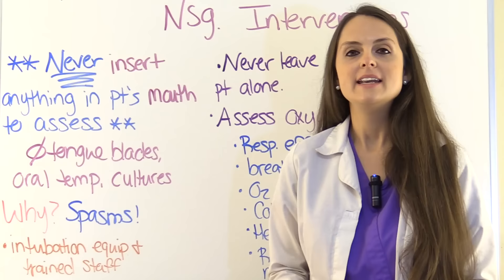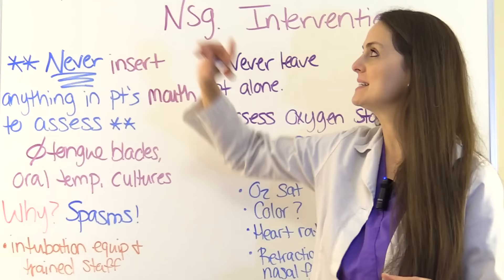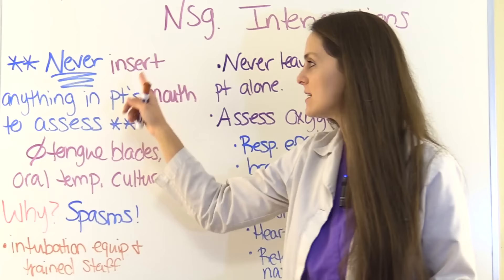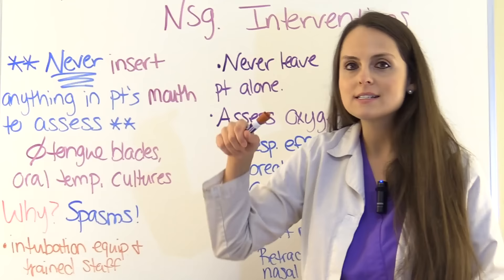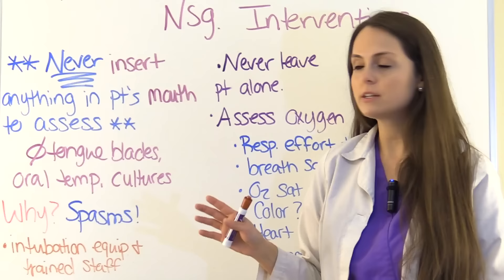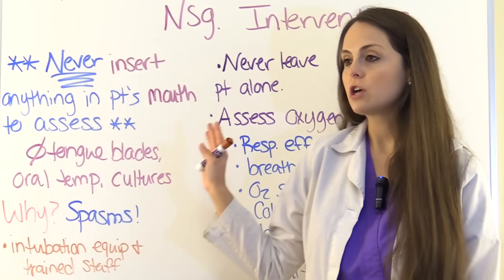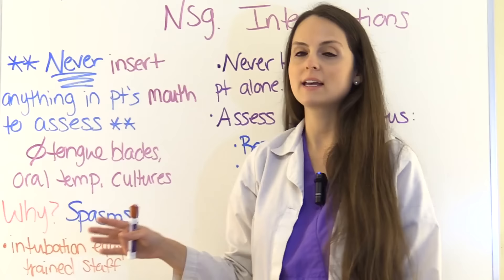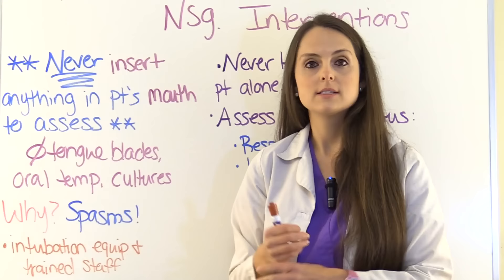Now let's talk about nursing interventions. Something that will likely be on your pediatric exam is to never insert anything into the patient's mouth to assess it whenever this condition is suspected or diagnosed. No tongue blades to depress the tongue and look at the throat — even though you'll be tempted when they report a sore throat. No oral temperatures; instead use rectal or tympanic routes, and no throat cultures. Why? Because it can cause spasms that will completely cut off the patient's airway.